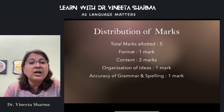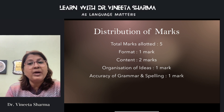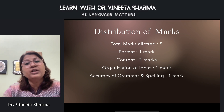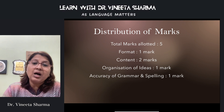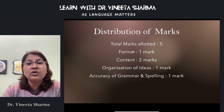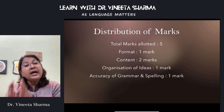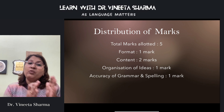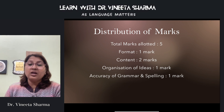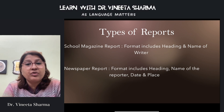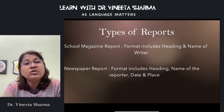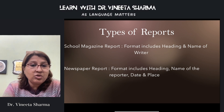Now let's see the distribution of marks in report writing. It is for five marks: format carries one mark, content carries two marks, organization of ideas carries one mark, and accuracy of grammar and spelling carries one mark — exactly the same as in article writing. The next topic is types of reports; you have two types in your syllabus.